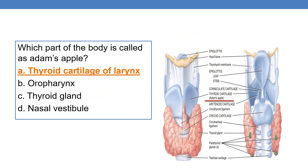Coming to the first question: which part of the body is called as Adam's apple? The answer is thyroid cartilage, not thyroid gland. Thyroid cartilage of larynx is called as Adam's apple.